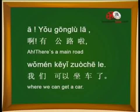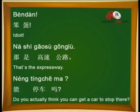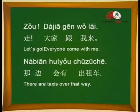有公路了，我们可以坐车了。 — Ah, there's a main road where we can get a car. 笨蛋，那是高速公路，能停车吗？ — Idiot, that's the expressway. Do you actually think that you can get a car to stop there? 走，大家跟我来，那边会有出租车。 — Let's go, everyone come with me. There are taxis over that way. Lucky we finally got away. We'll see if they make it or not.